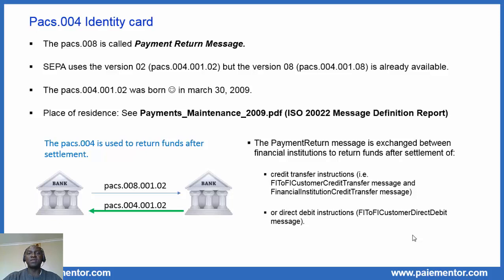The file name is the Payment Maintenance 2009, which can be downloaded on the ISO 20022 website. As the name of the message suggests, the PAX4 is used to return funds. The funds return happens after settlement between two financial institutions. It can be the settlement of credit transfer instructions or direct debit instructions. In our case, we consider credit transfers since we are talking about the SCT. In any case, the sender of the funds gets his money back.